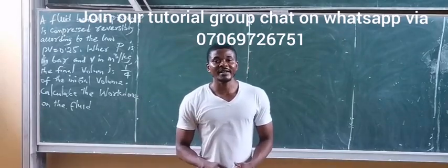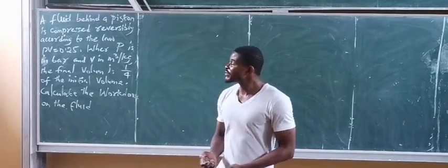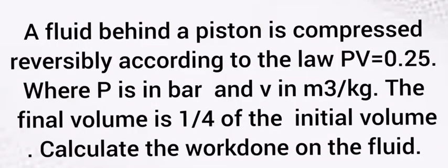Welcome to Engineer's Mindset. Now we have a problem on the board which says a fluid behind a piston is compressed reversibly according to the law PV equals 0.25, where P is in bar and V in meters cubed per kg, and the final volume is one-fourth of the initial volume. Calculate the work done on the fluid.